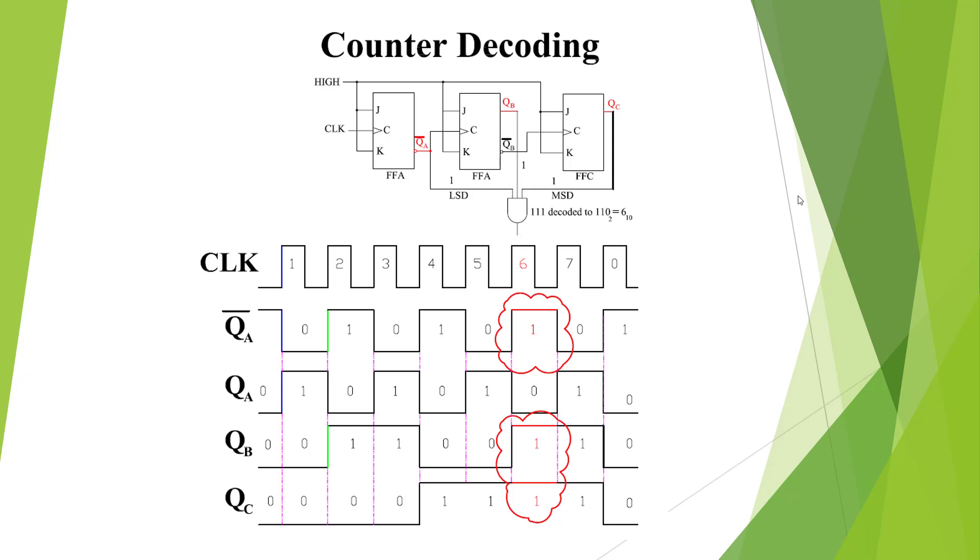And the way we read that is this guy's connected to the Q so he's going to be a 1. Since this one's tied to the Q not, we're going to count that as a 0. This is the least significant digit. This is the most significant digit.